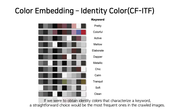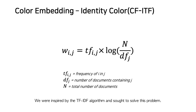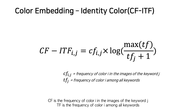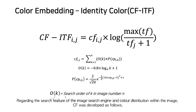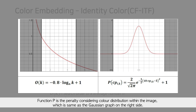To obtain identity colors that characterize a keyword, a straightforward choice would be the most frequent ones. However, this intuitive approach ends up listing grayscale colors, as they are prevalent in images with text, symbols, and scenes with shaded areas. We were inspired by the TF-IDF algorithm to solve this problem. This paper proposes CF-ITF, where CF is the frequency of color i in images of keyword j, and ITF is the frequency of color i among all keywords. Regarding the search feature of image search engines and color distribution within images, CF was developed with function O as a penalty according to word order in searching, and function P as a penalty considering color distribution within the image, shown as a Gaussian graph.